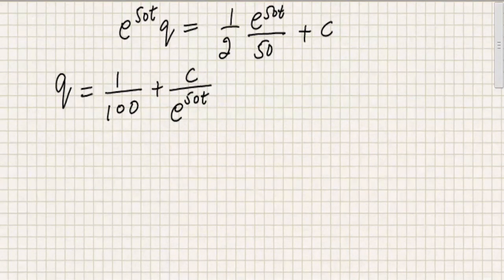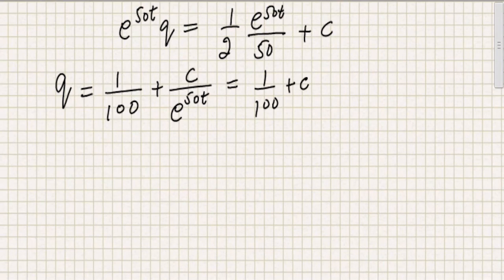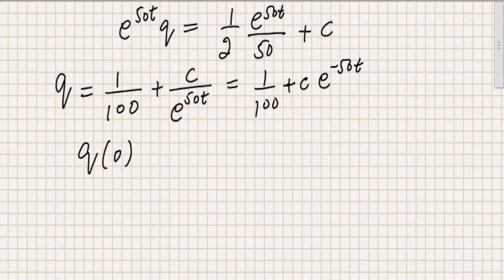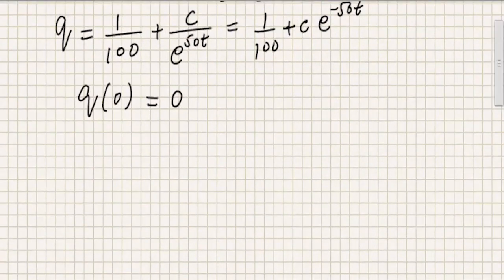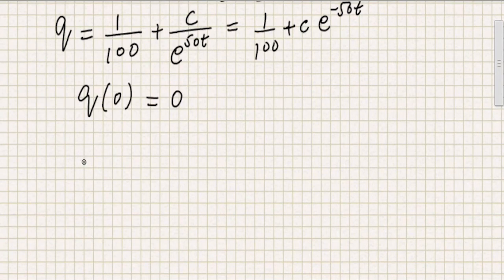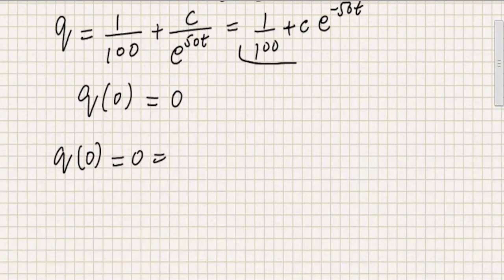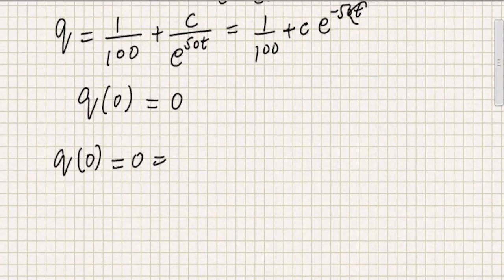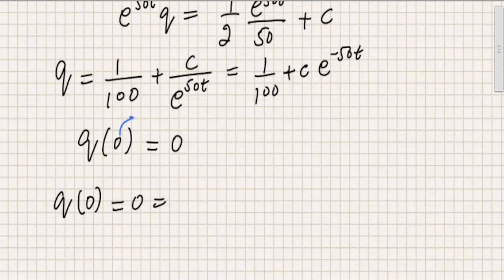So now what do I do? I try to find the value of C. So before we do that, I would like to write this as 1 over 100 plus C e to the power minus 50T. So you should remember that the initial value of charge on the capacitor was given to be 0. So if that is the case, we can use this into the general solution that we just found out. And I'm going to write Q of 0 equal to 0 equal to, now this is the right hand side, instead of small t here, I'm going to insert the value 0. Because this 0 denotes time and this 0 denotes the charge at that time.